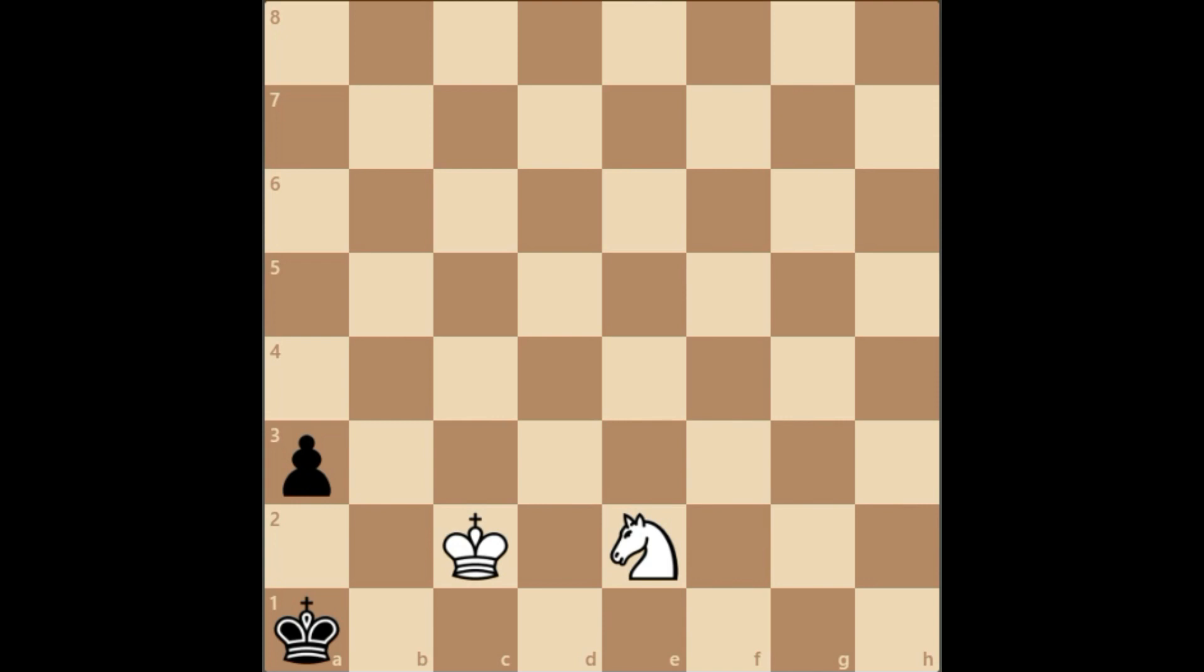Here, Black is actually trying to queen the rook pawn but has been forced into a1. In these circumstances, instead of defending the queening square, White can actually force a checkmate.